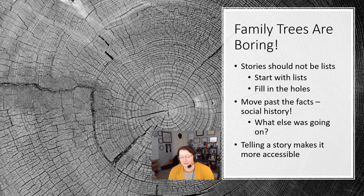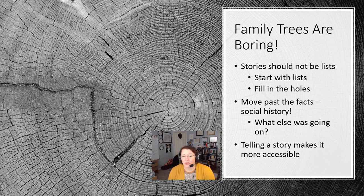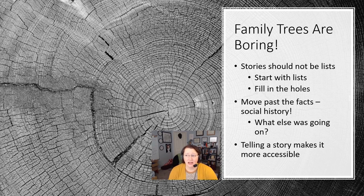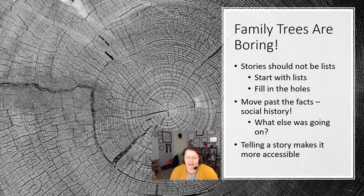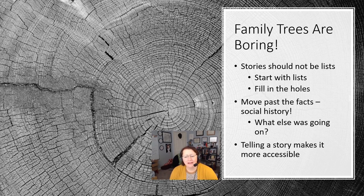It shouldn't just be a list. You could start with a list of things they did and places they went, but you should fill in the information with a narrative. Fill it in with social history — what was happening in their town, their state, or the world at the time. How did it affect your ancestors? Did they have to move because of something that was happening? Make the story accessible and interesting, because you're sharing this with your family.